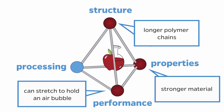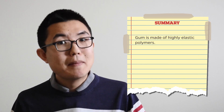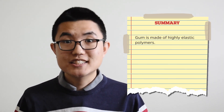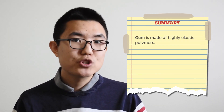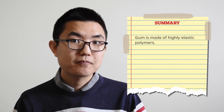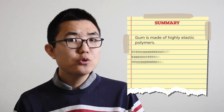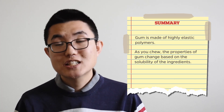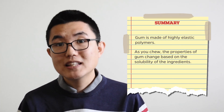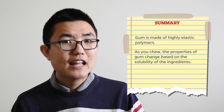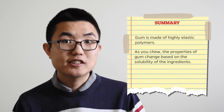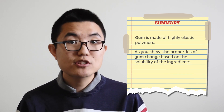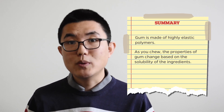That is, of course, if you have the right technique to blow it. Okay, time for a summary of what we learned today. Chewing gum and bubble gum are both made of highly elastic polymers, which gives the gum its springy texture. As you chew gum, the properties change depending on the solubility of the ingredients. The flavor is lost first, because the flavoring molecules are most soluble and dissolve away.